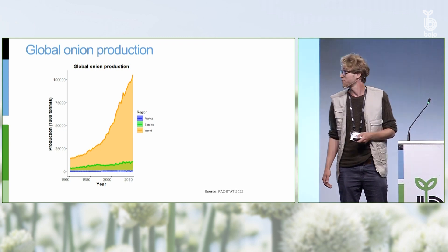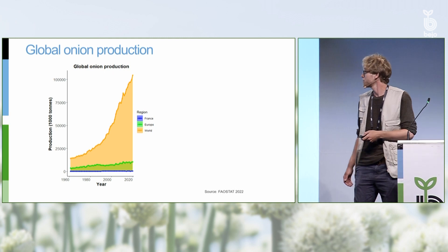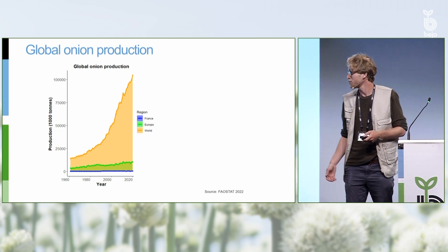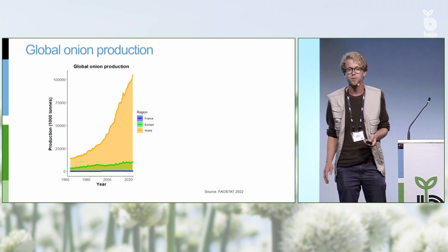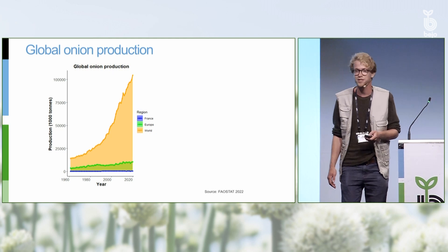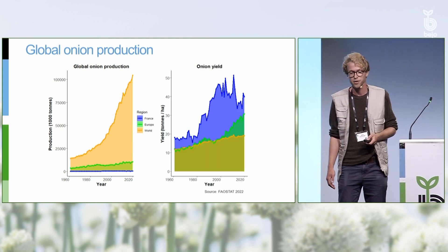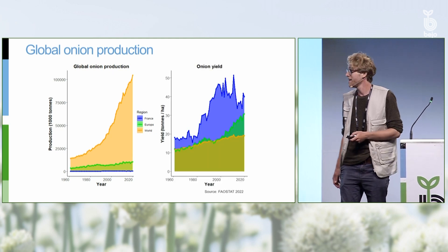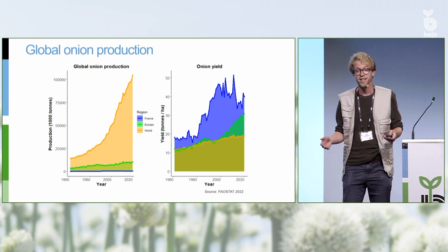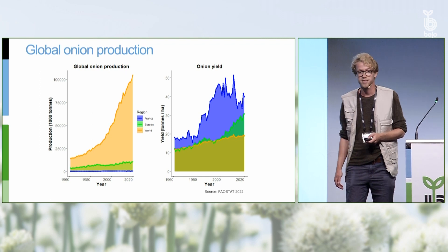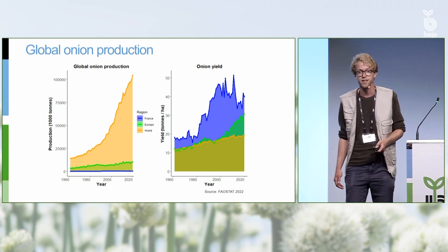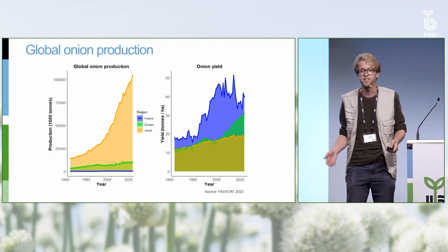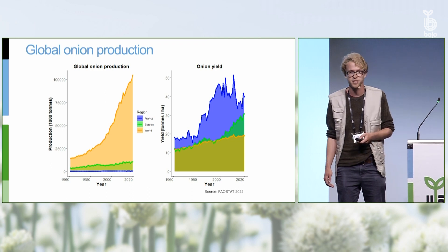In green and yellow you see Europe and France — it's not so much compared to the rest of the world. But if you look at the yield per hectare, you can see that in Europe and especially in France, the yield per hectare is a lot higher compared to the rest of the world.